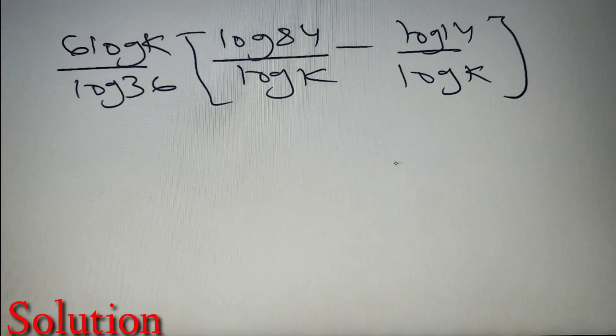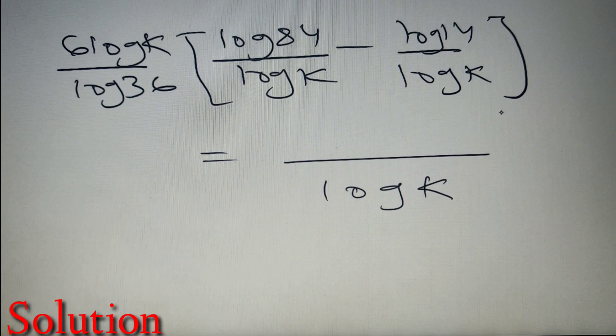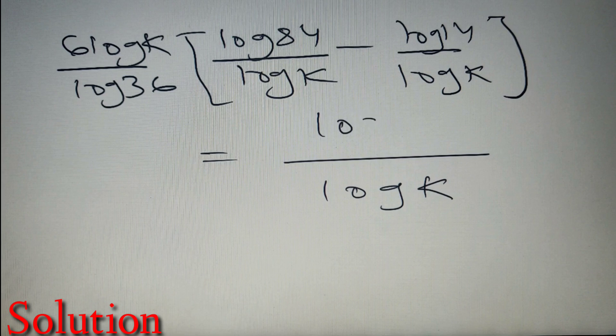Now over here you can see that log K is common in the base so we can take the LCM. So we will get log K as the denominator and we will get log 84 minus log 14 in the numerator. Now you know that if log A minus log B is present then we can write it down as log A by B. So log 84 minus log 14 is equivalent as log 84 by 14, which is equal to log 6.